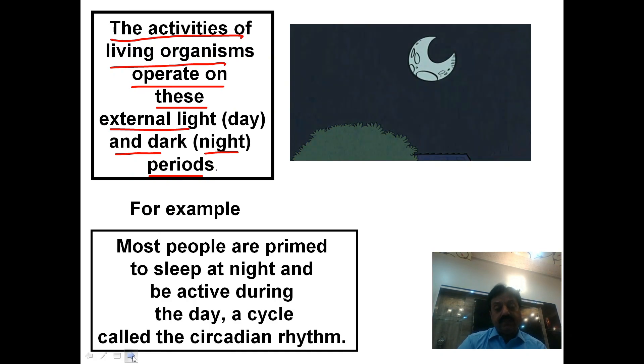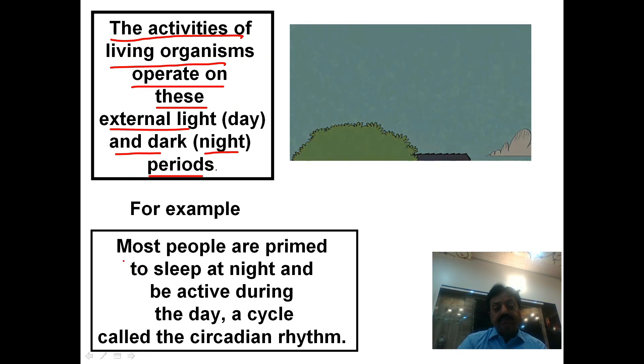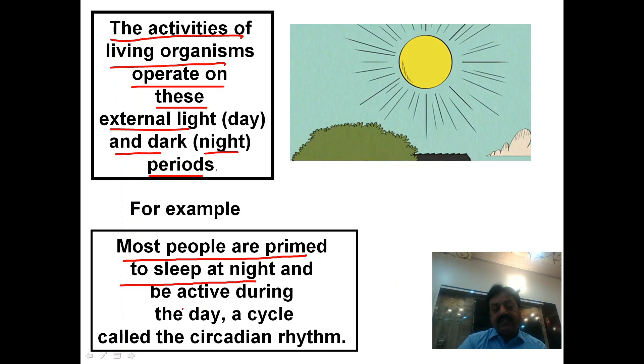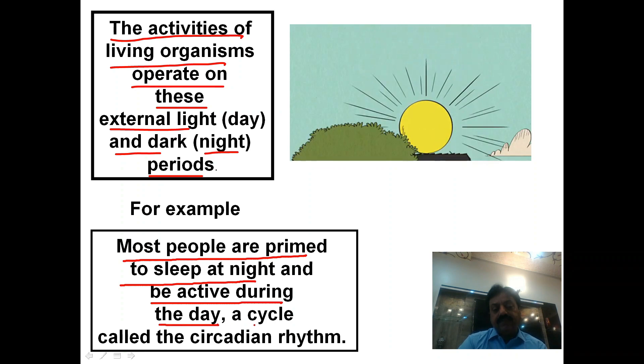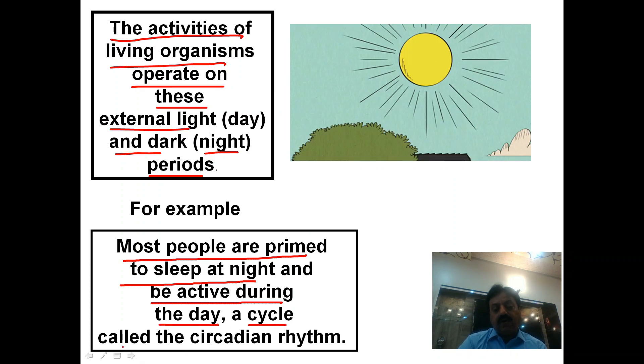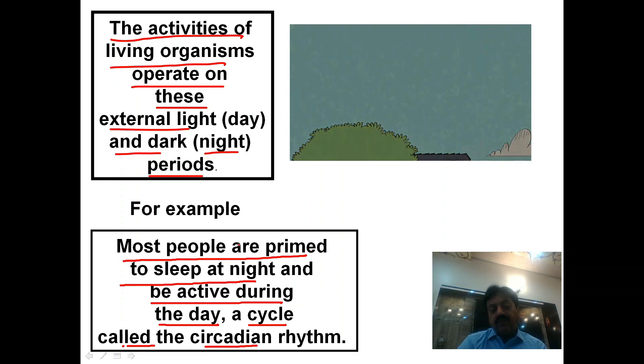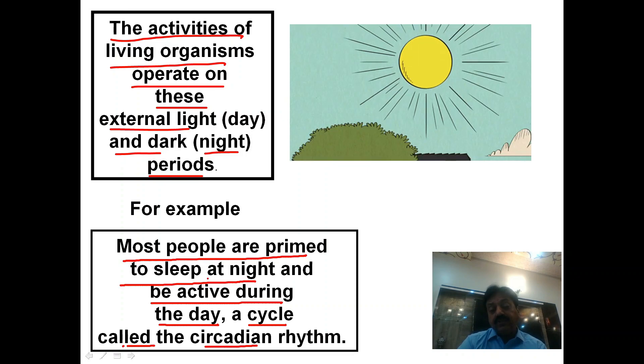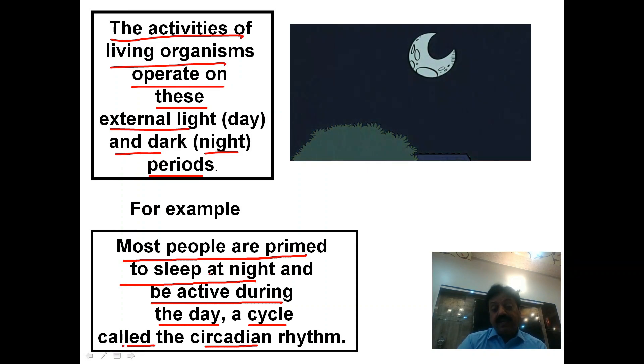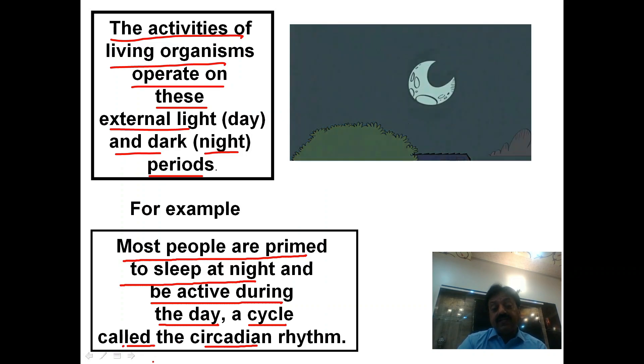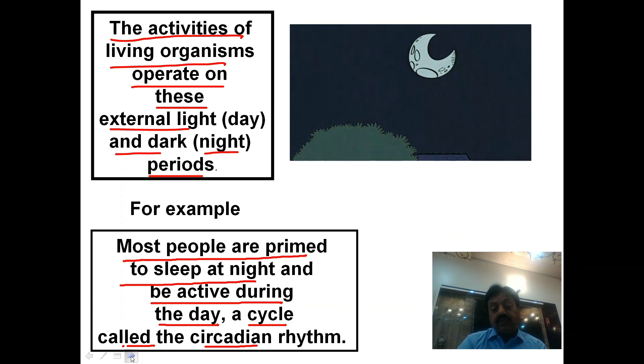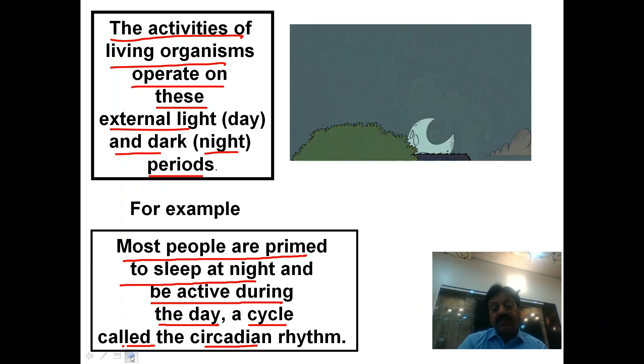The activities of living organisms operate on these external light day and dark night periods. For example, most people are primed to sleep at night and be active during the day, a cycle called the circadian rhythm.